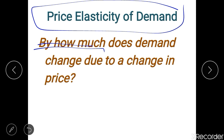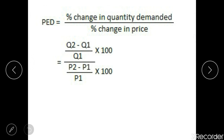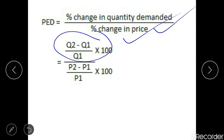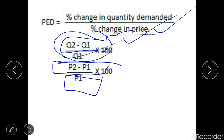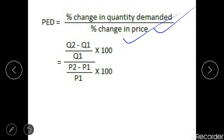The formula for calculating price elasticity is very simple: it is the percentage change in quantity demanded divided by the percentage change in price. The percentage change in quantity demanded is represented as the change in quantity divided by the original quantity, and the percentage change in price is the change in price divided by the original price. This gives you the coefficient of price elasticity of demand.